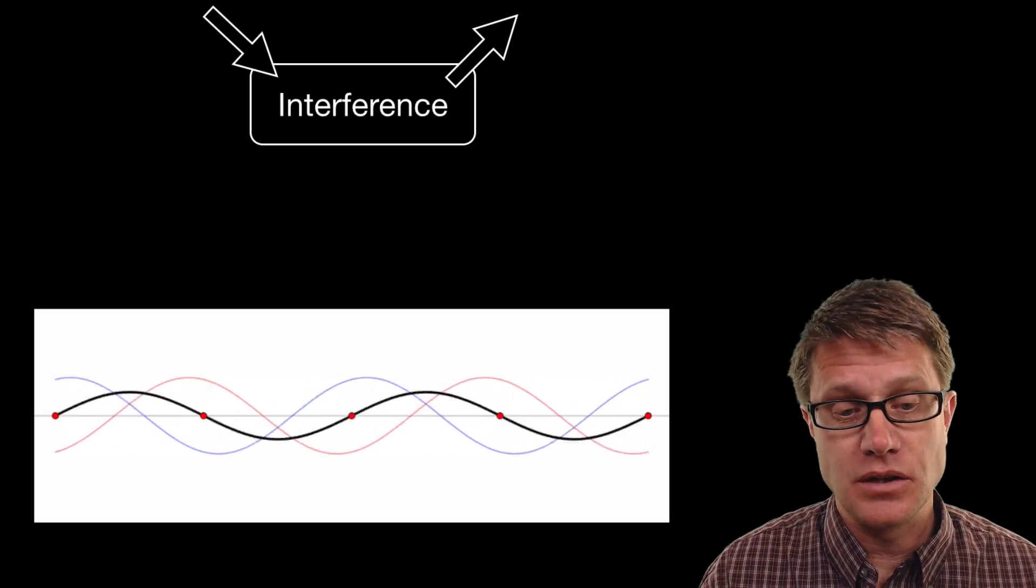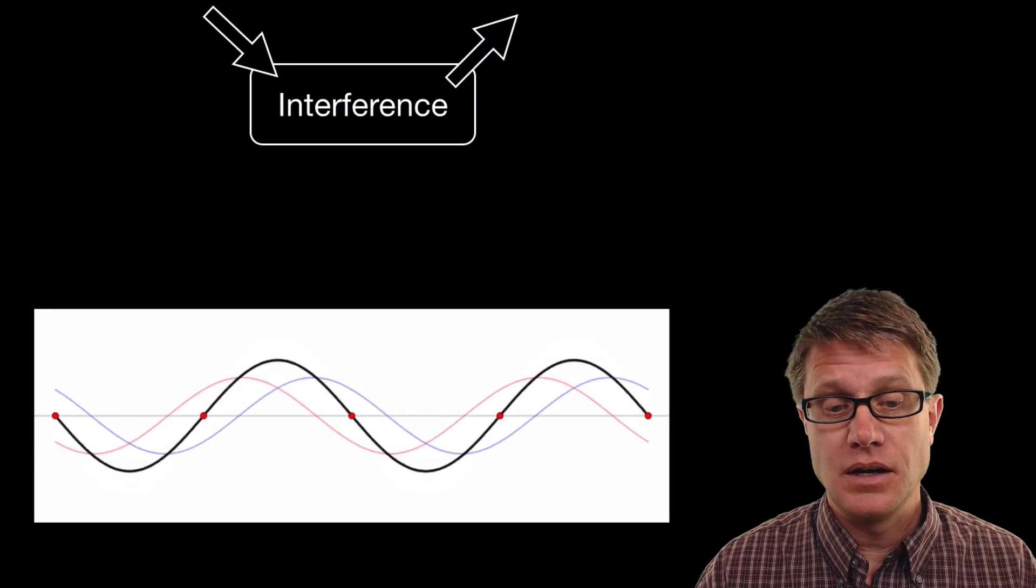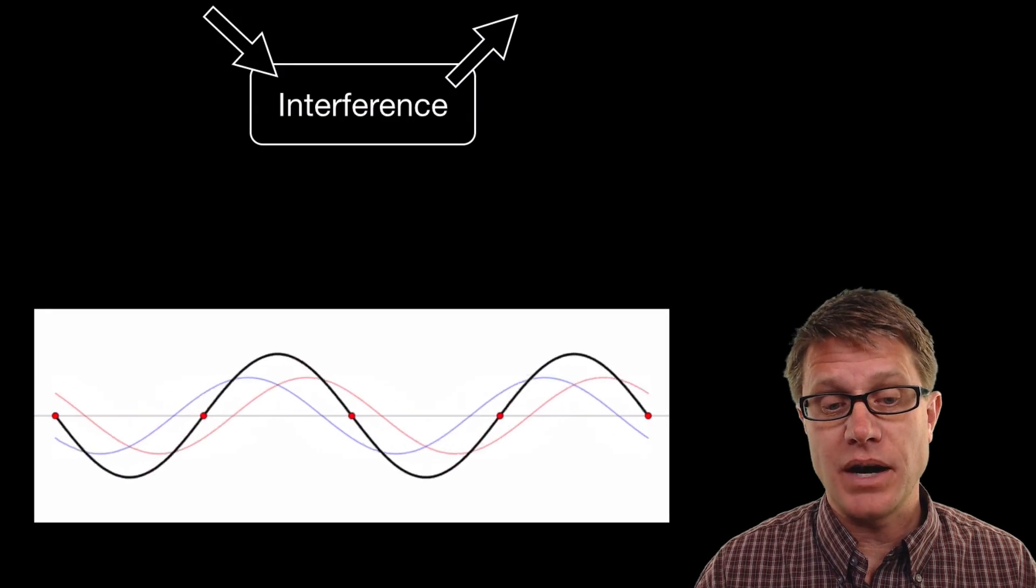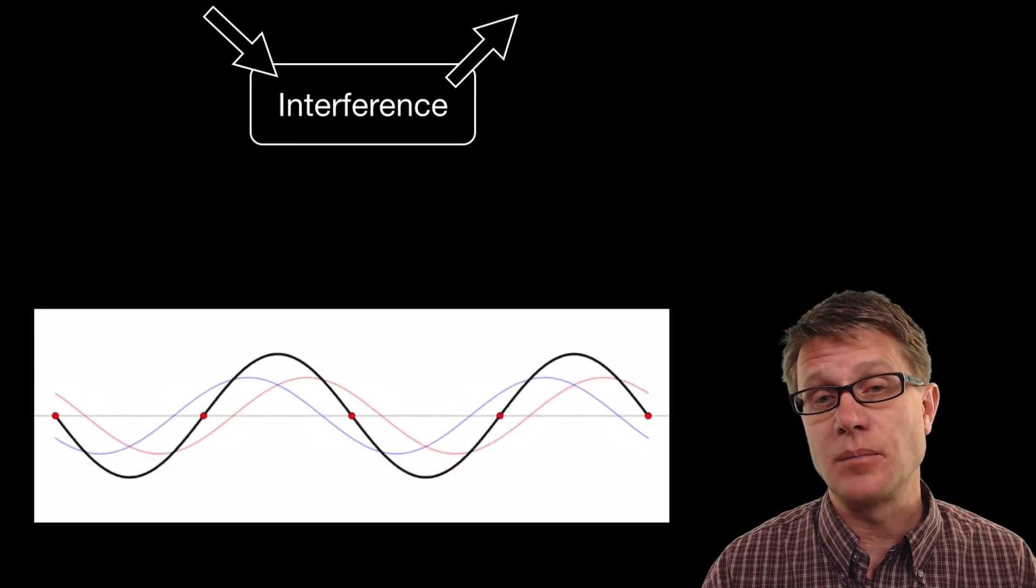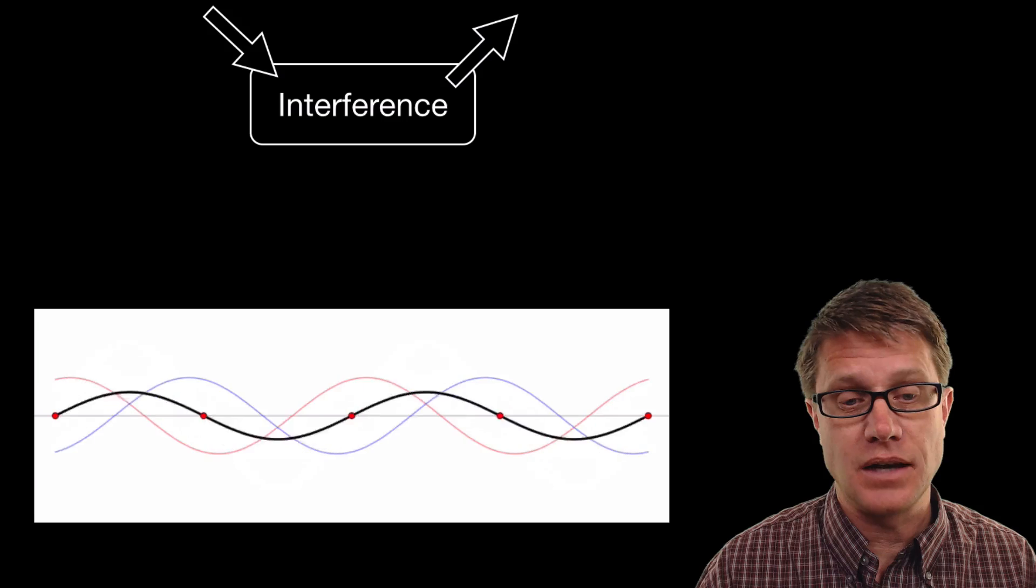And so if we look at this animation the dark wave is going to be the standing wave. But in the background you can see the blue and the red waves that are bouncing back and forth and back and forth. And it is the summation of them that creates the standing wave.